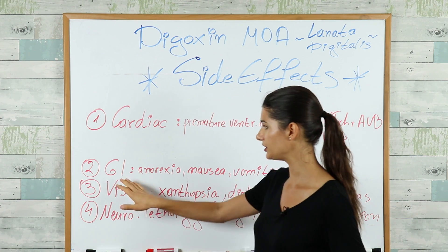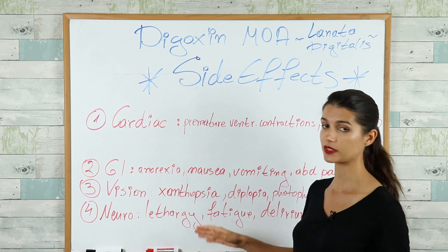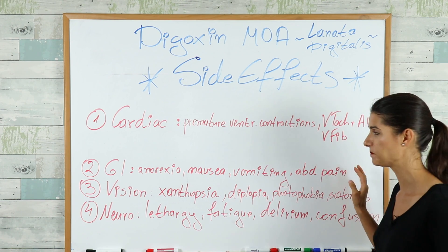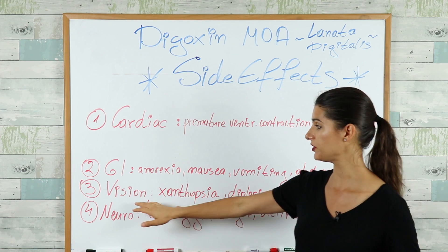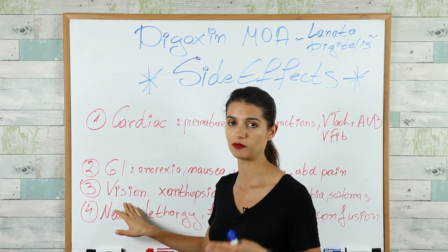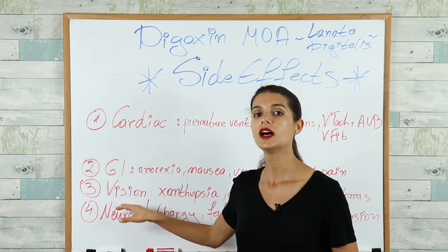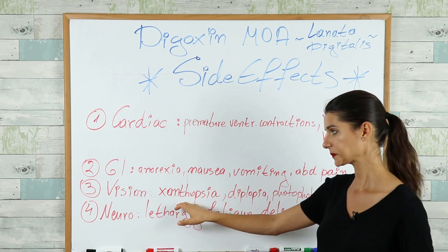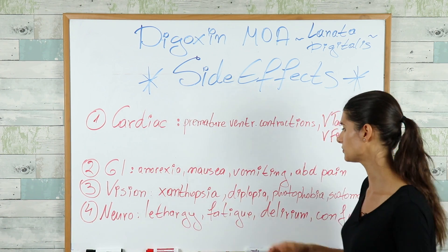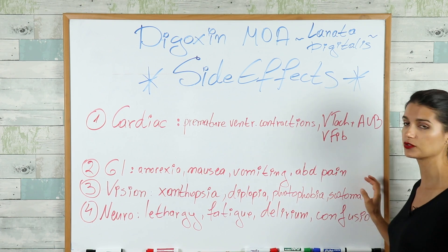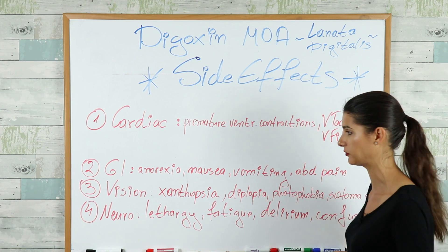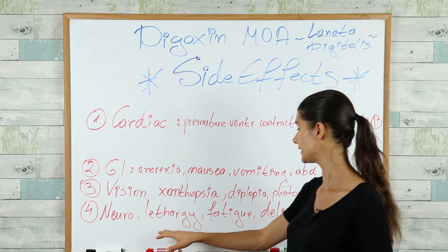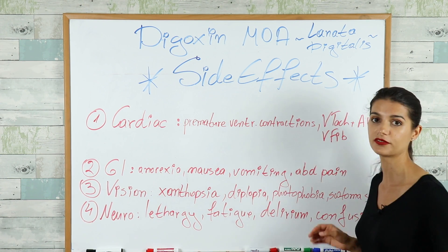For GI side effects, the most common ones are anorexia, nausea, vomiting, and abdominal pain. We also see vision changes with digoxin use — the most common is yellow-colored vision, called xanthopsia. Diplopia, photophobia, scotomas, and even blindness can also occur. Neurological side effects include lethargy, fatigue, delirium, and confusion.